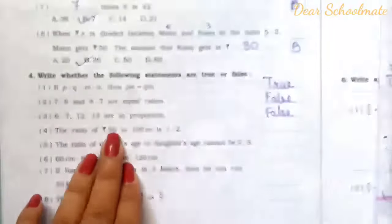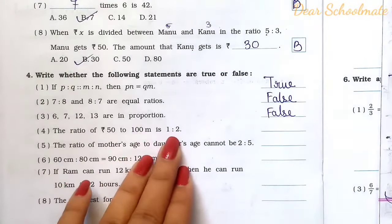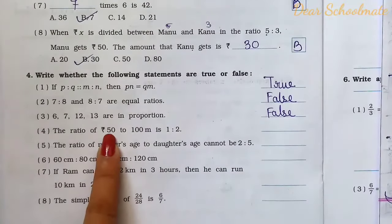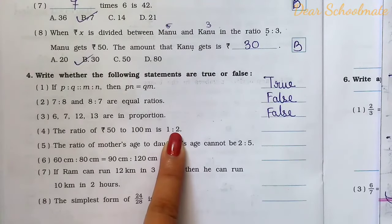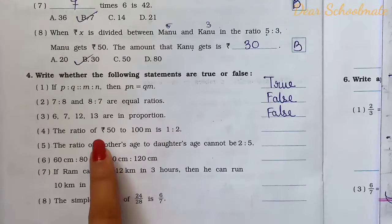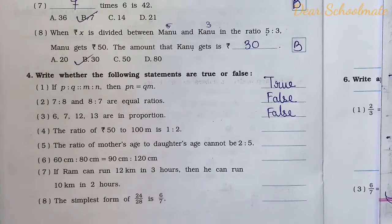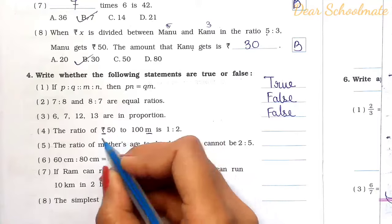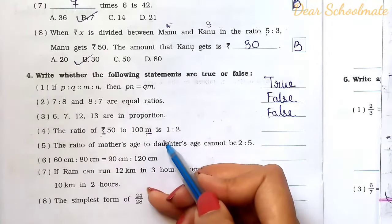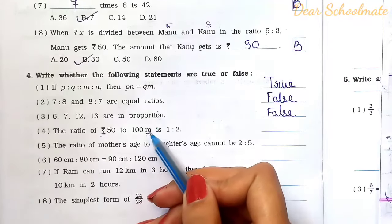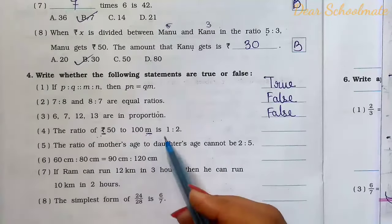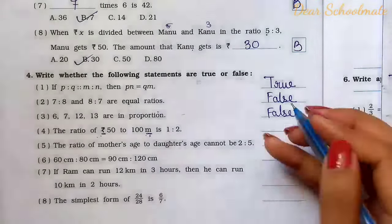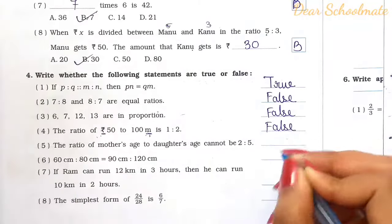Number 4: The ratio of 50 rupees to 100 meters is 1 is to 2. Although numerically 50 and 100 simplify to 1 is to 2, this is wrong because the units are different — rupees cannot be compared to meters. We cannot convert one to the other as they measure different things. The statement is false.